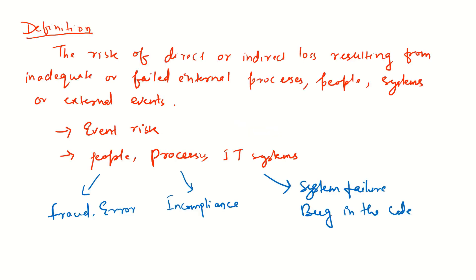Today we will understand what is operational risk. As the name suggests, operational risk is risk arising from operational incidents. The definition according to Basel is that the risk of direct or indirect loss resulting from inadequate or failed internal processes, people, systems, and external events.